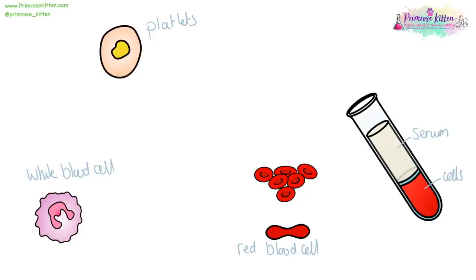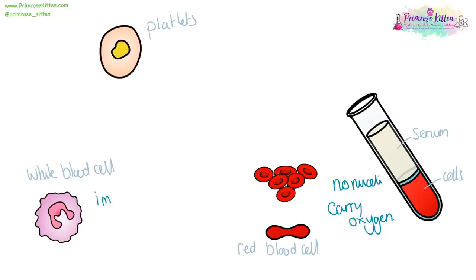Blood is made up of several components. The actual colour of blood is a pale yellow — this is the serum, the liquid component. The cells give it its red colour. Red blood cells have no nuclei so they have more space to carry oxygen, which is their main function. White blood cells are part of the immune system. And platelets are fragments of cells important for clotting.